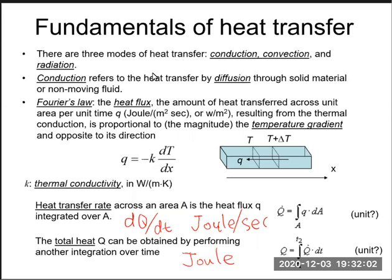In the last lecture, we discussed the three modes of heat transfer: conduction, convection, and radiation. Thermal conduction can be described by Fourier's law, namely the heat flux Q is equal to negative K dT/dx, where K is the thermal conductivity and dT/dx is the temperature gradient.